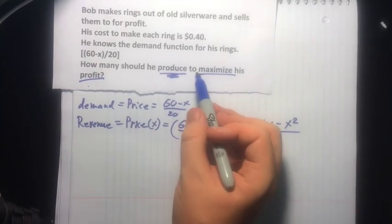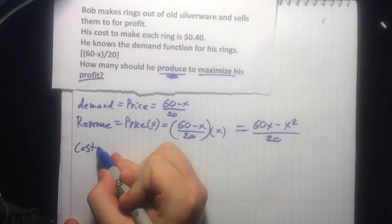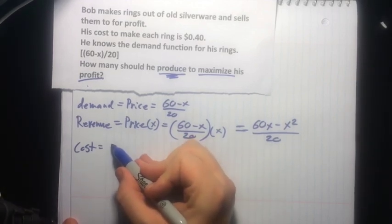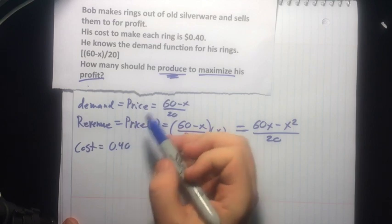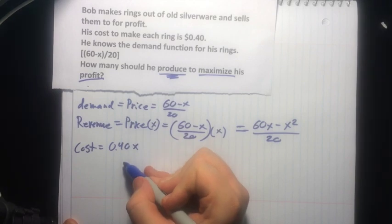To really know his profit, we have to know what it costs Bob. So that's where this cost equation comes in. And that's just what it takes him to produce each one of these. Cost is pretty easy: $0.40 to make each ring. So just each one he makes costs another 40 cents.